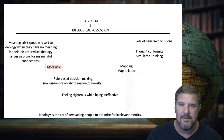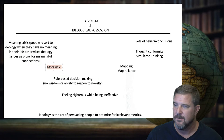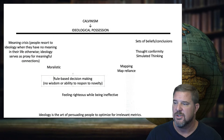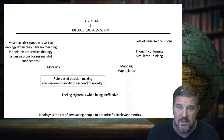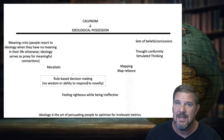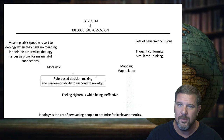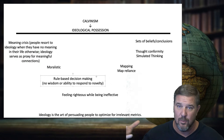Moralistic reasons for why something is right or wrong are not good reasons — it's right or wrong regardless of moralistic framing. Rule-based decision-making: when a person grows into wisdom, they have the ability to respond to novelty — something they haven't been trained to deal with — and make wise decisions. An ideologue can only operate in rule-based decision-making and can't think outside that rule set.